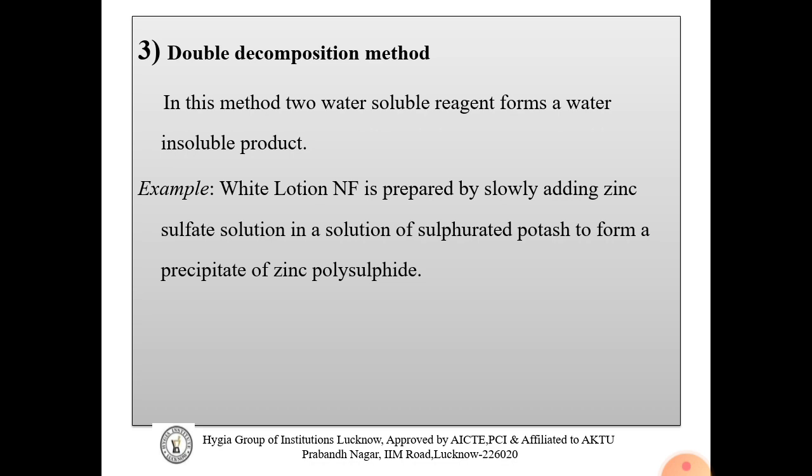In the double decomposition method, two water-soluble reagents react to form a water-insoluble product. For example, white lotion is prepared by slowly adding zinc sulfate solution to a solution of sulfurated potash, which forms a precipitate of zinc polysulfide. The zinc polysulfide is a third agent that precipitates as a suspension. This process is called the double decomposition method.